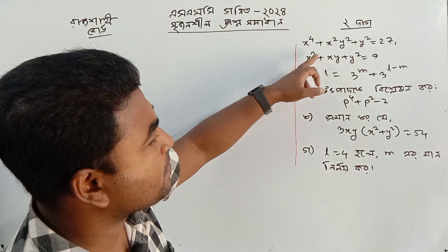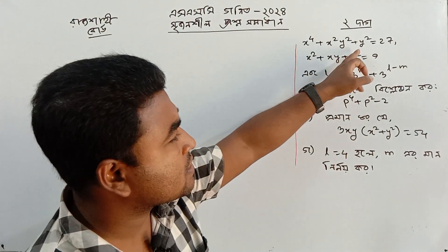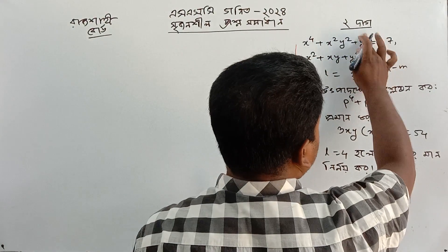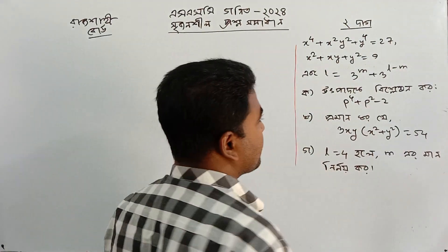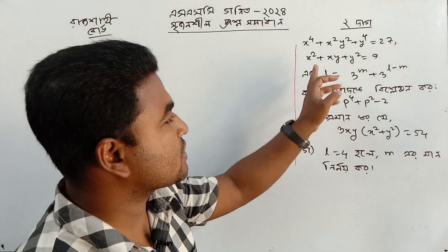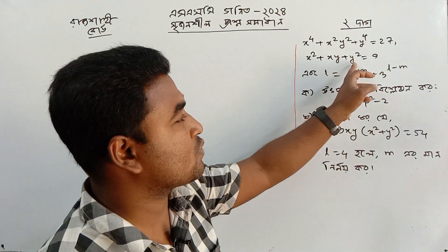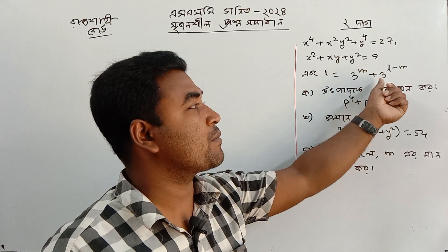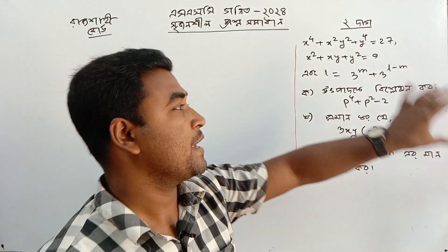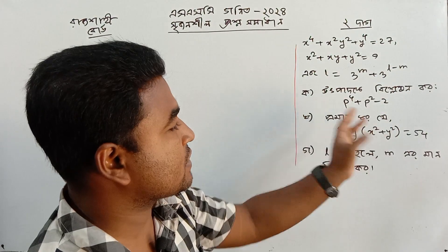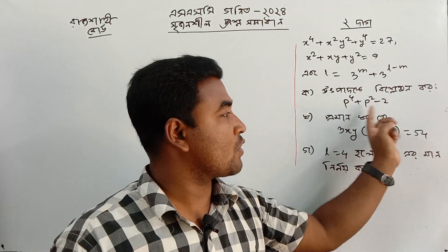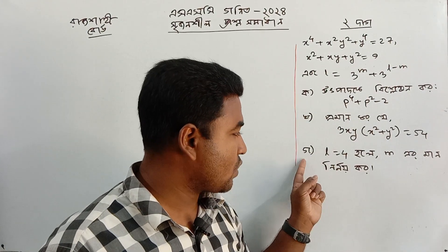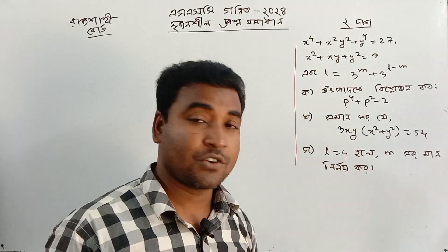Look, x⁴ plus x² plus y⁴ is equal to 27, and x² plus xy plus y² is equal to 9. Also, l is equal to 3 to the power m plus 3 to the power l minus m. The question involves l equal to 4 and x equal to 4.